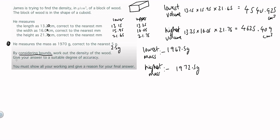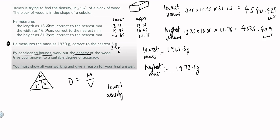Now I'm going to work out the density by considering the bounds — I've already got the bounds: lowest and highest for both mass and volume. You know the formula: density equals mass divided by volume. To get the lowest possible value for the density — the lower bound — I pick the smallest value for mass and the highest value for volume, as I explained at the beginning of the video.